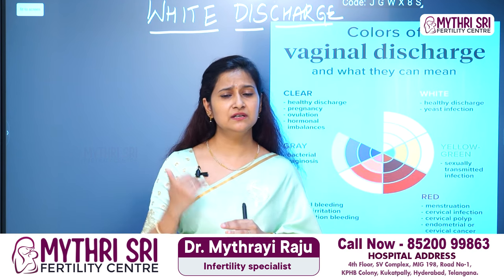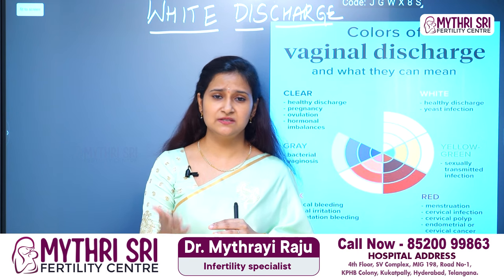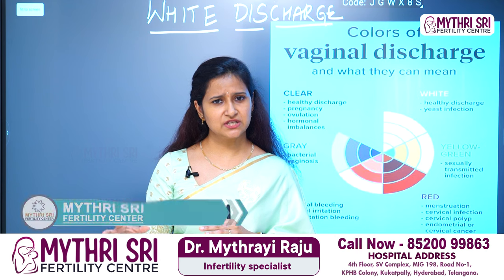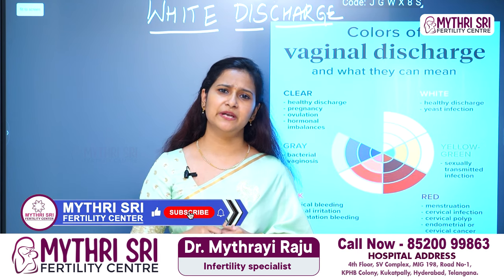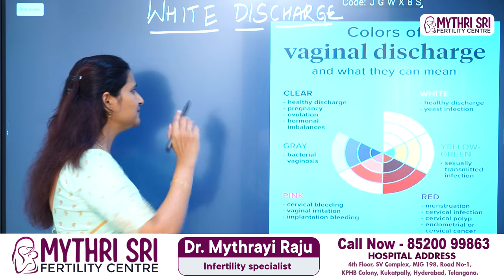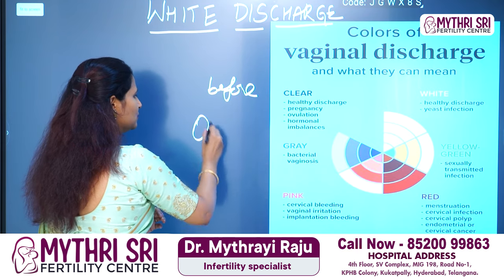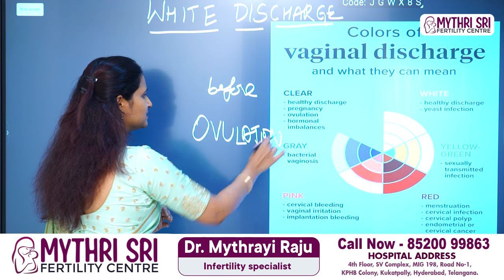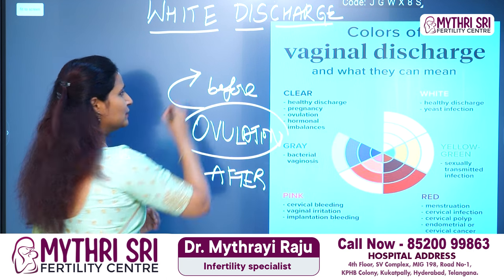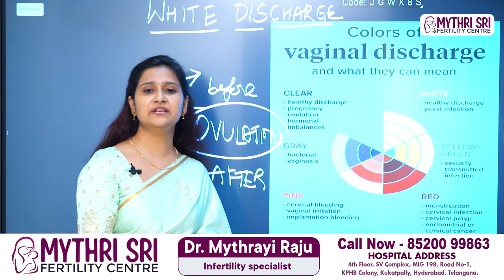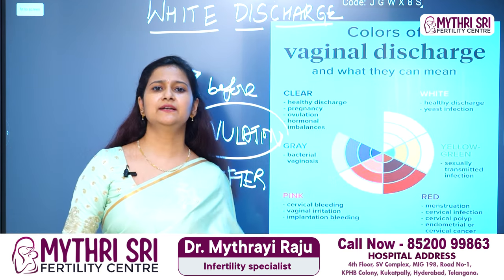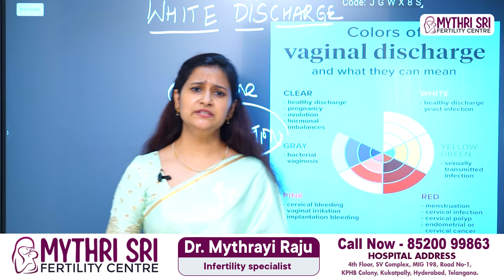After ovulation, the white discharge is progesterone-influenced. The discharge becomes low and thick, and breaks quickly. This progesterone-influenced discharge is the main thing associated with ovulation. Before ovulation the discharge has a mucoid, jiggly, watery consistency; after ovulation it becomes thick and easy to break. This is completely normal white discharge.